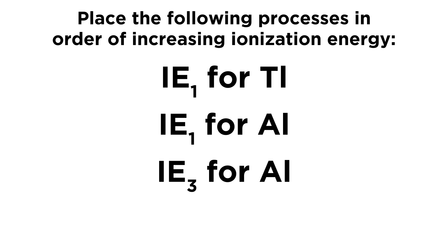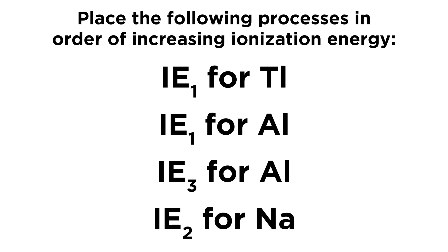Then IE3 for aluminum, the third ionization energy for aluminum — meaning we've already removed one electron, removed a second electron, and now we're removing a third electron from aluminum. And IE2 for sodium, the second ionization energy for sodium, meaning we've already removed one electron and now we are removing the second.